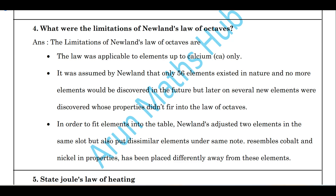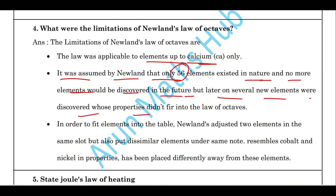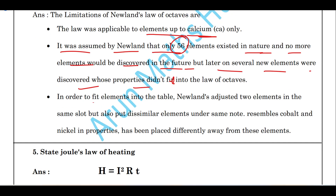The limitations of Newland's law of octaves: first, the law was applicable to elements up to calcium only. Second, Newland assumed that only 56 elements existed in nature and no more would be discovered, but later several new elements were found whose properties did not fit the law of octaves. Third, in order to fit elements into the table, Newland placed two elements in the same slot and also put dissimilar elements under the same node. For example, cobalt and nickel were placed differently away from elements with similar properties.